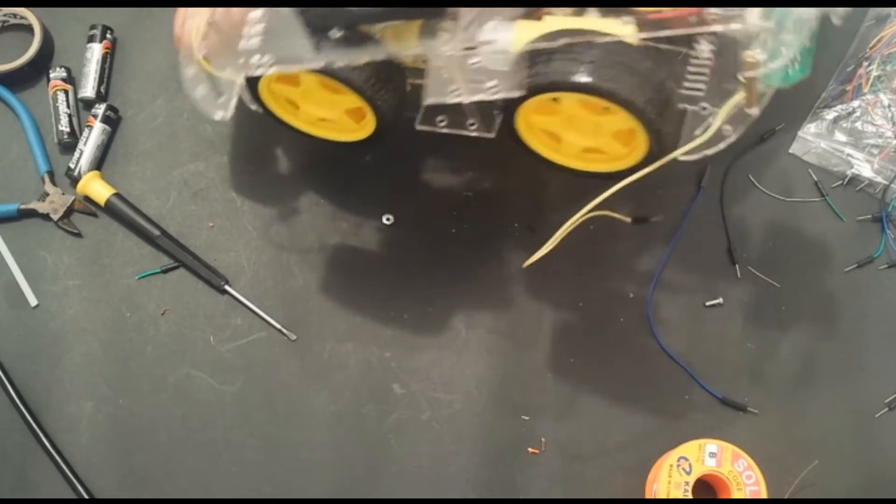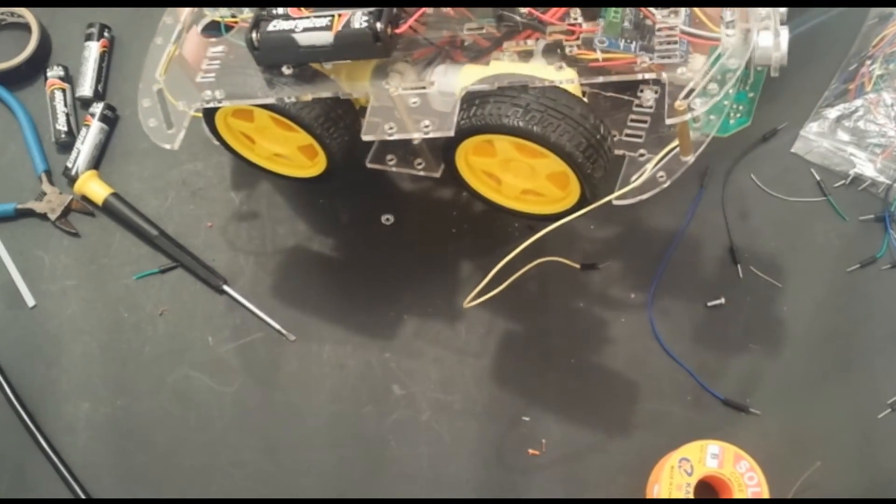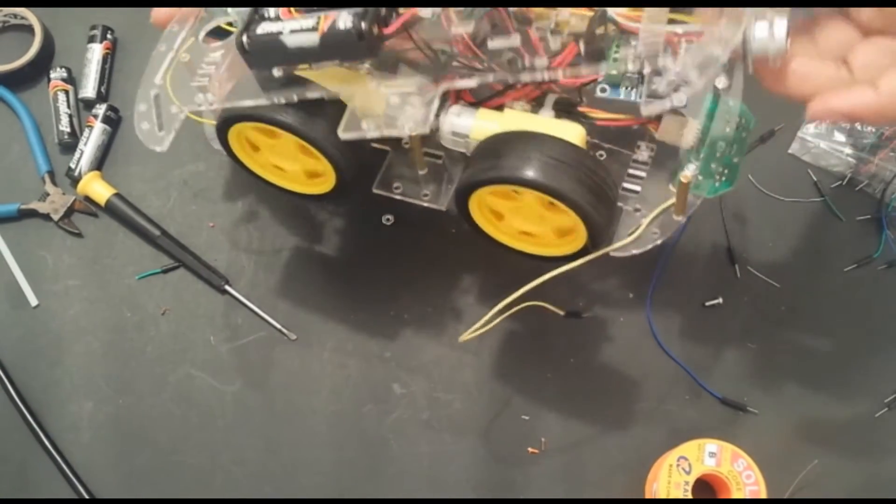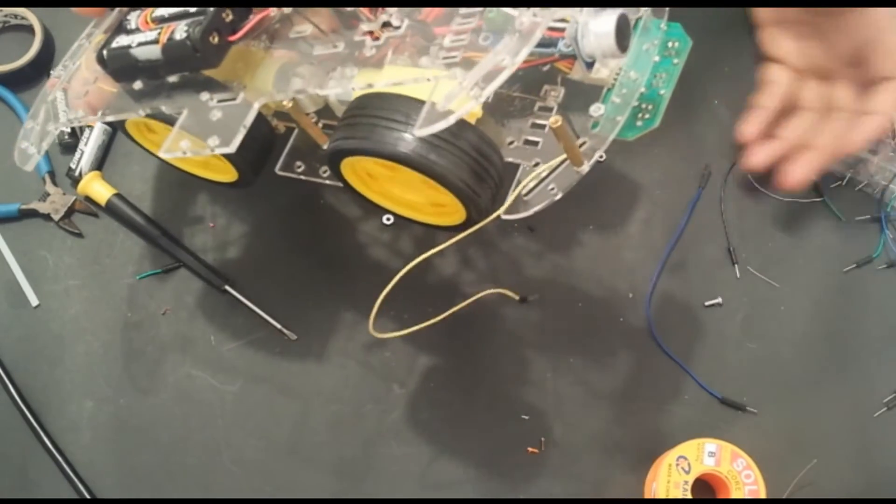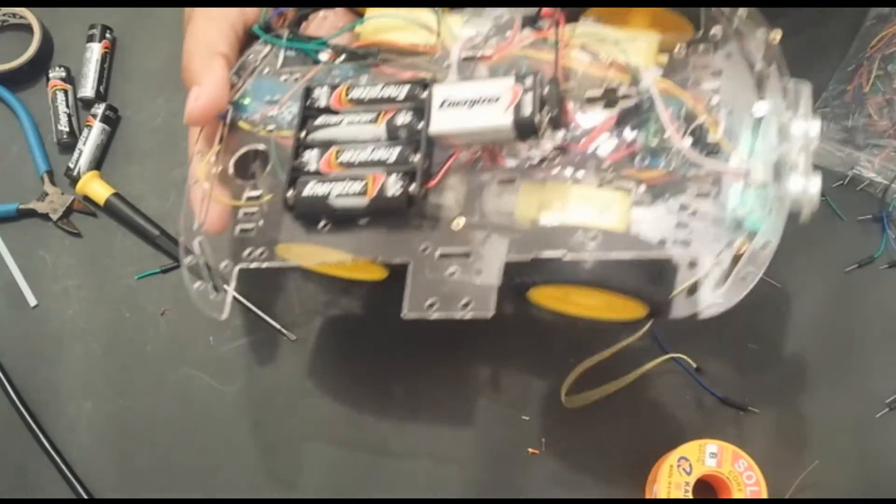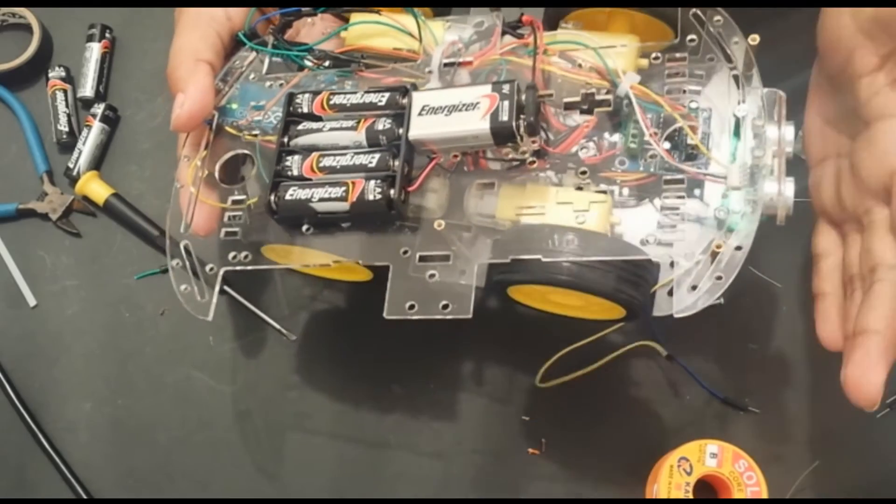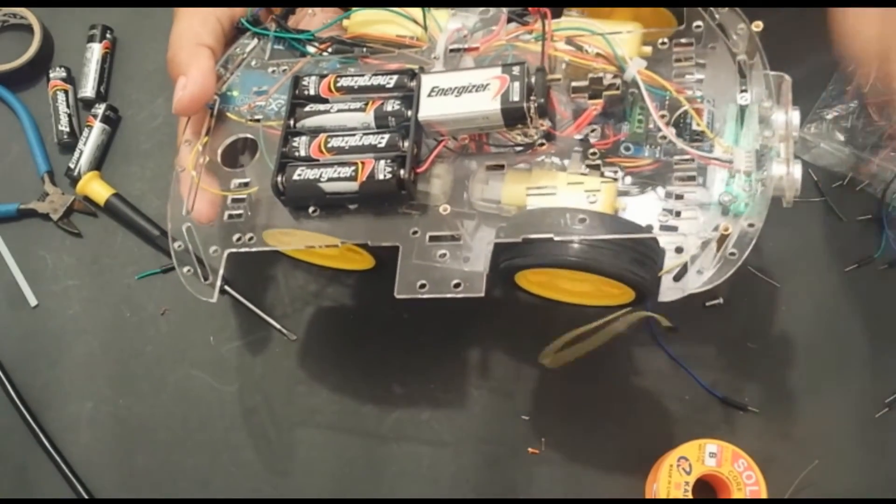And now as you can see, when I click the switch on, the wheels move. And if I put my hand, the wheels change direction. So obstacle avoidance is working.